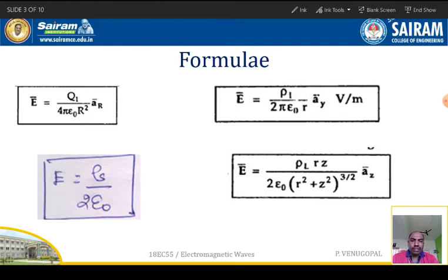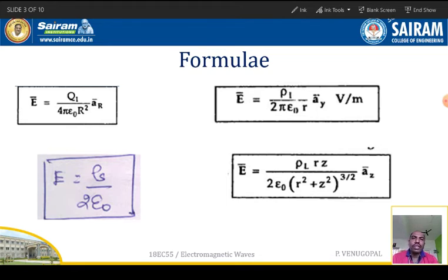The last formula is the electric field intensity at a point on the axis of the charged circular ring: E is equal to rho-L times r times z, divided by 2 epsilon-0 times (r-squared plus z-squared) to the power of 3 by 2.